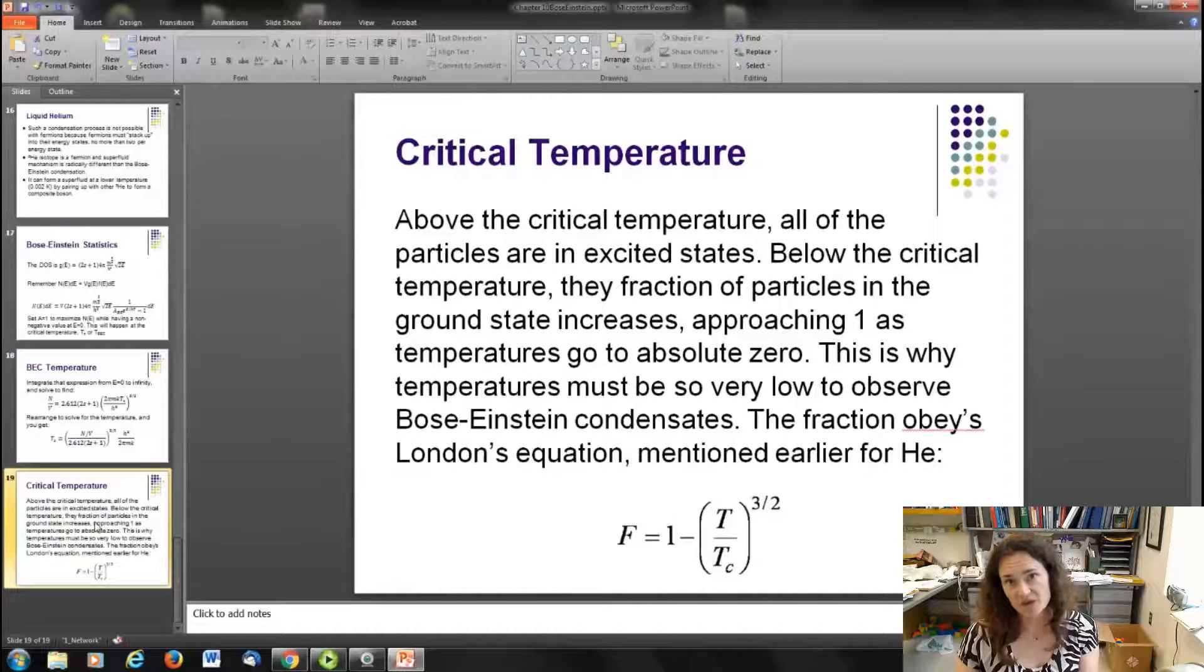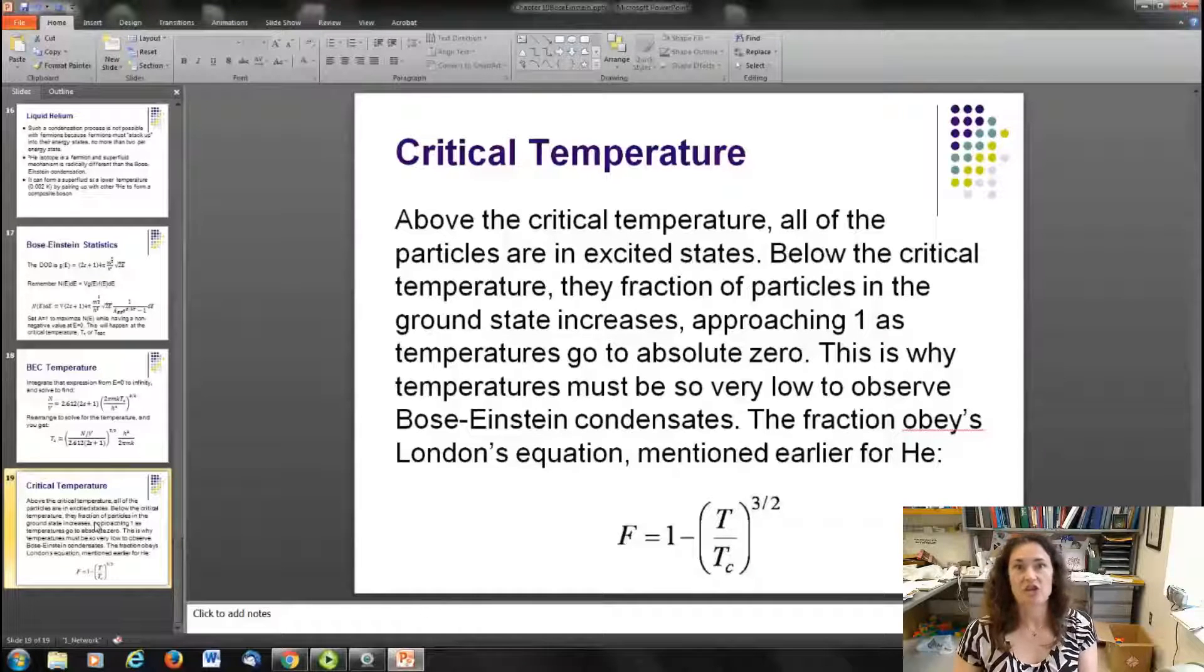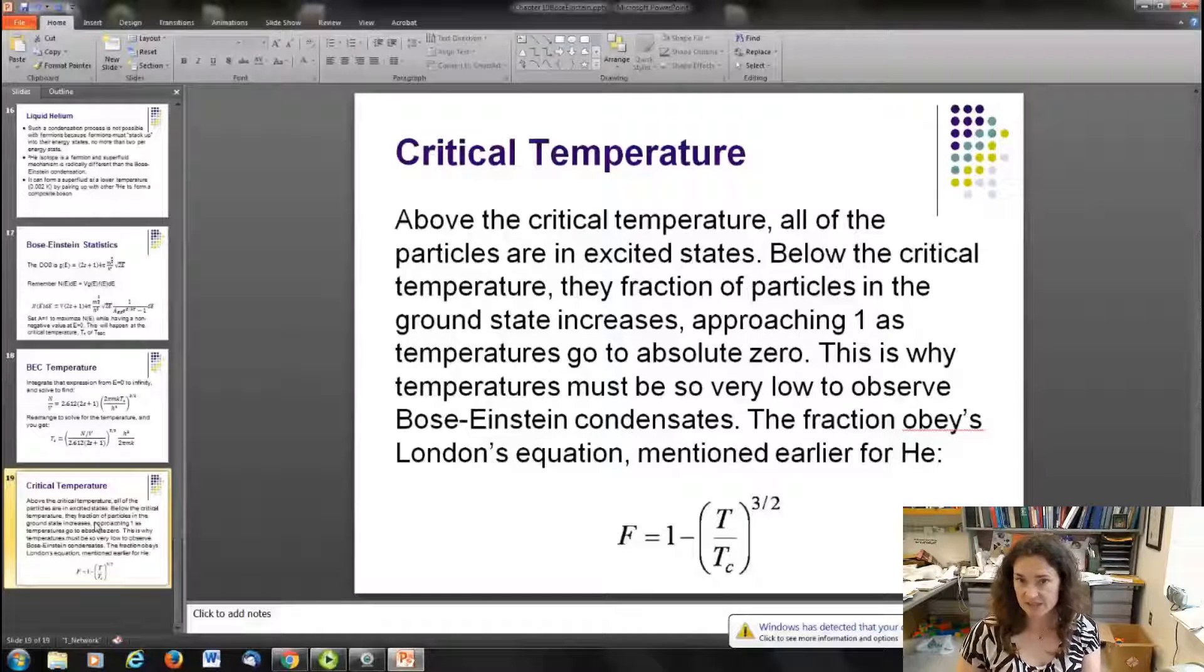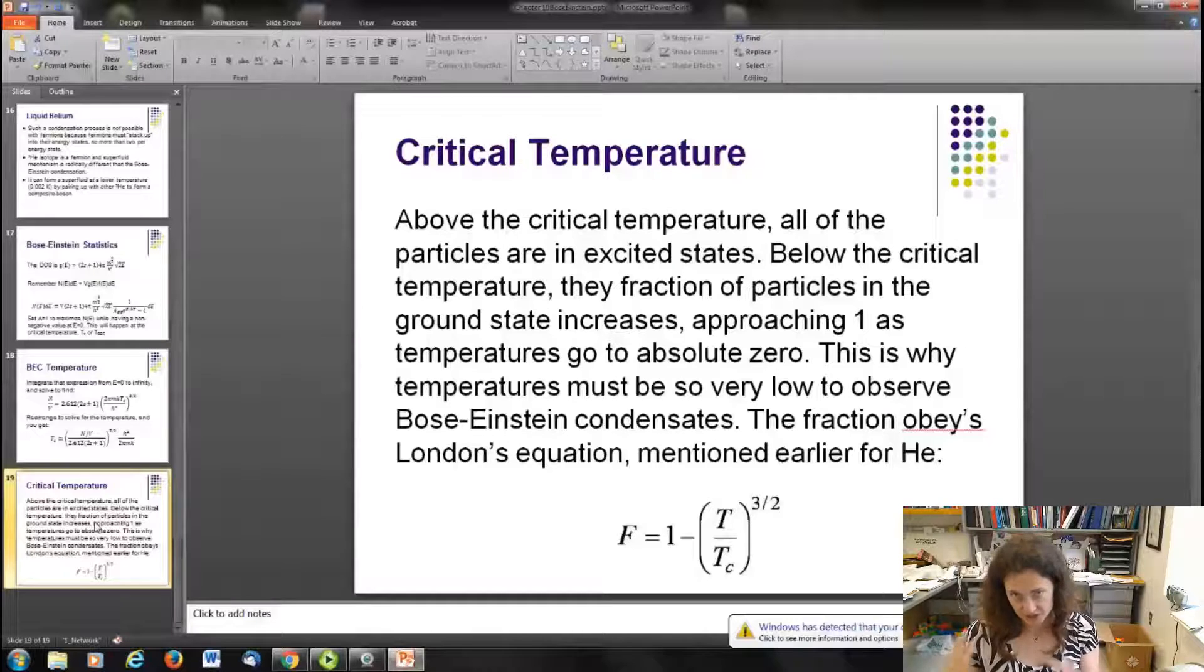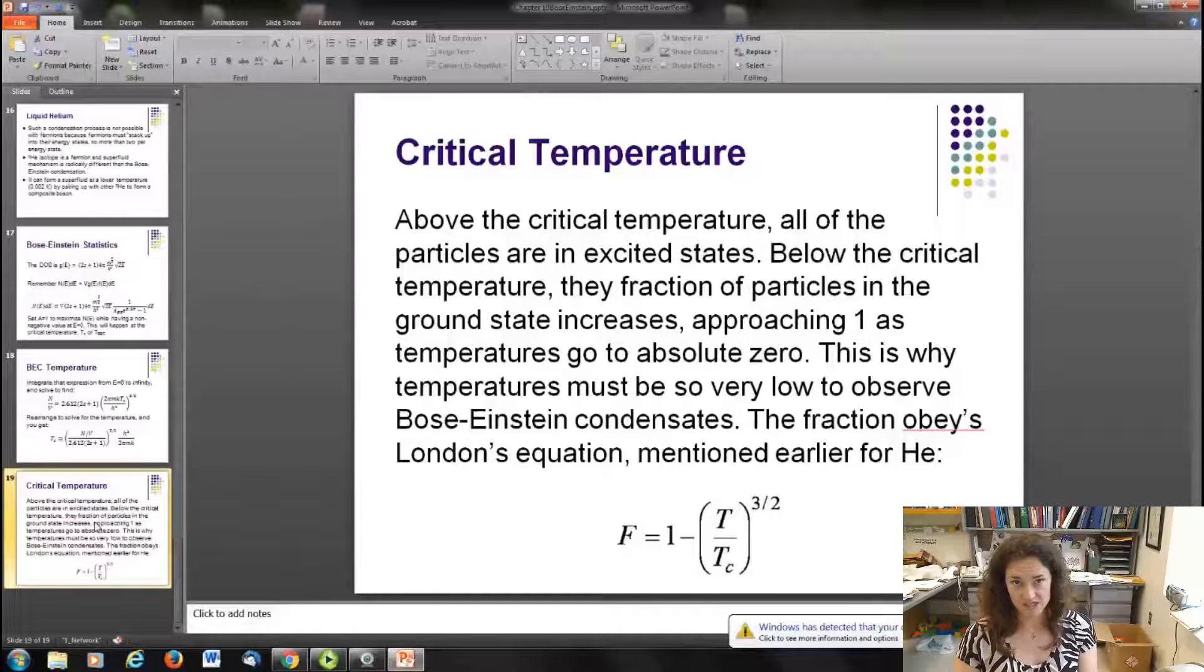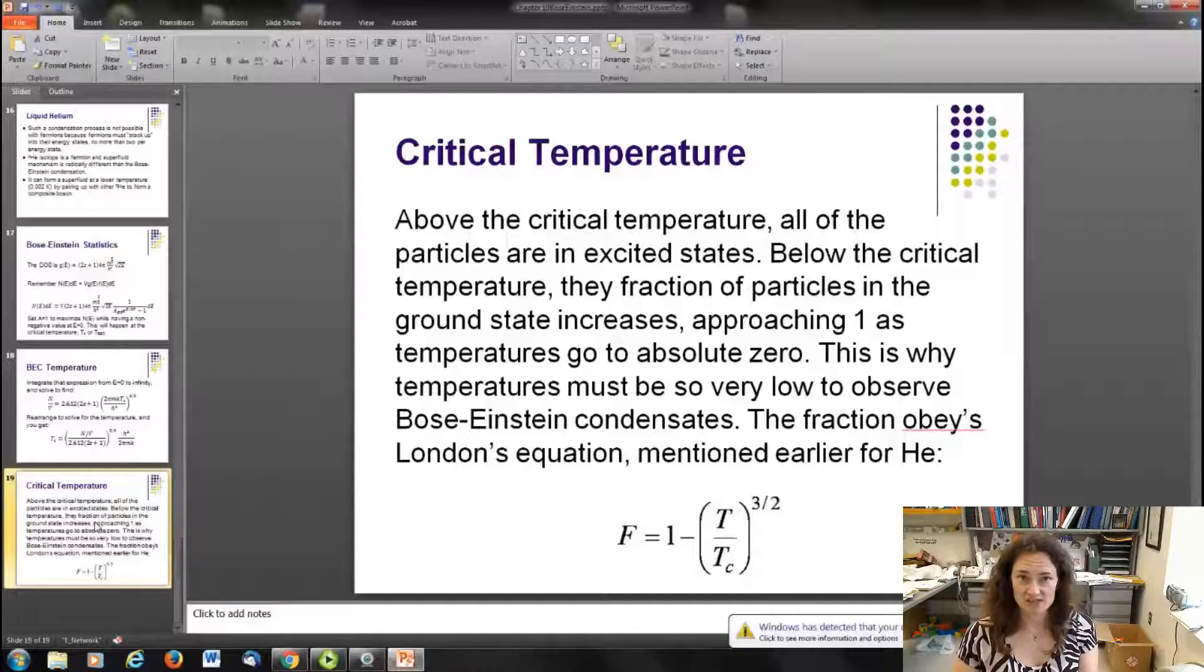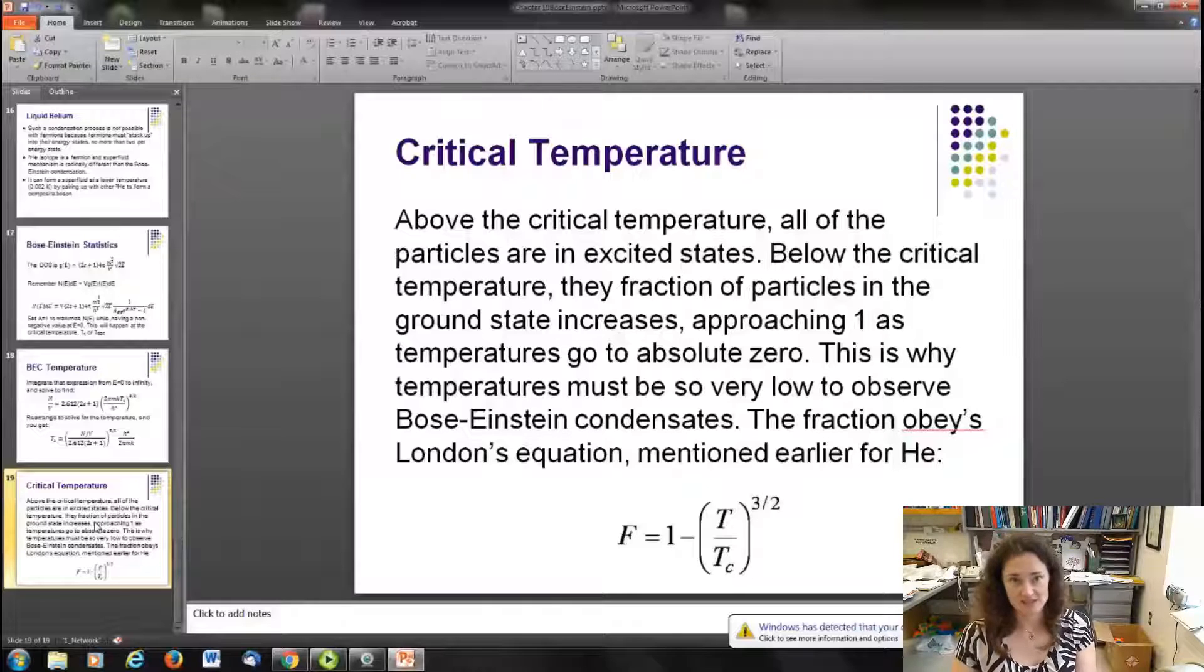Now, in Bose-Einstein condensates above that critical temperature, all the particles are basically in an excited state. But then once you reach that critical temperature, you undergo a phase change and particles begin to drop down into that ground state where they can all coexist. It actually obeys the equation that London laid out in 1938 for the fraction of particles that are in that ground state given a temperature T. So this is why Bose-Einstein condensates are really, really hard to fully and totally observe. Bose-Einstein condensates weren't observed in the laboratory until about 1995. And then the people that did it, there were two different groups with three physicists working together in sort of competitive, happy collaboration. And they all achieved Bose-Einstein condensation around the same time. So the three of them shared the Nobel Prize for Physics in 2001 for proving the existence of Bose-Einstein condensates.